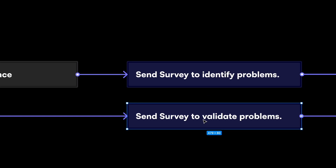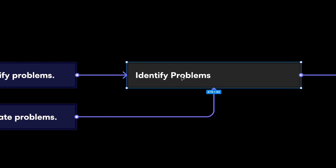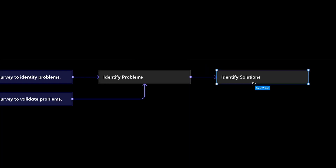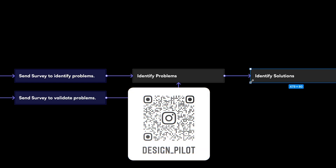Once you've defined the target audience, you can send a survey for two different use cases: to identify problems, or to validate problems. If you don't know what the problems are, you reach out to your target users and try to identify them. If you already know — say you're a student living away from family — you can send it to friends or classmates to validate what you think the problems are. The intent determines what questions you draft.